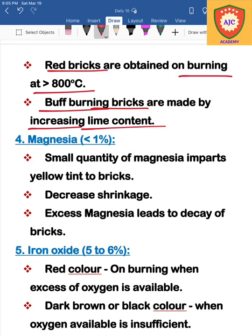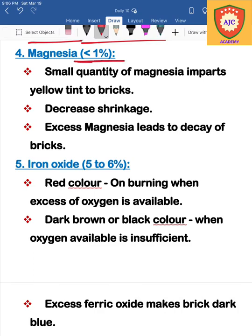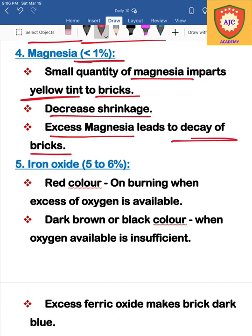The next ingredient is magnesium, which is present in small amounts. Magnesium gives the brick a yellow tint. If magnesium is present in excess, it causes shrinkage and the brick may decay.